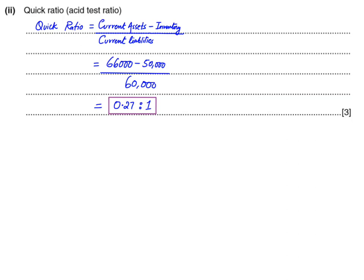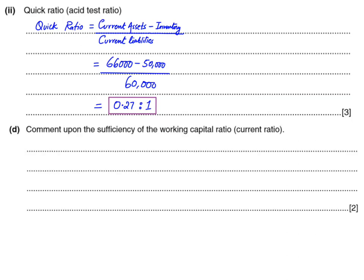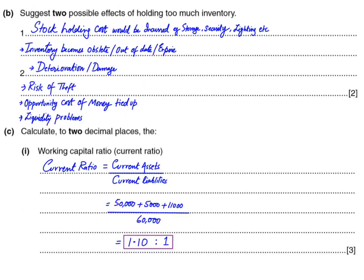Ideally quick ratio should be 1:1. The maximum limit to maintain is 2:1 and the minimum limit is 0.7. If quick ratio falls below 0.7 we can comment that the liquidity of the business is in danger and the business risks not meeting its liabilities when due. The question asks for comments on current ratio, not quick ratio. Ideally current ratio should be 2:1 but in this scenario we only have 1.10:1.